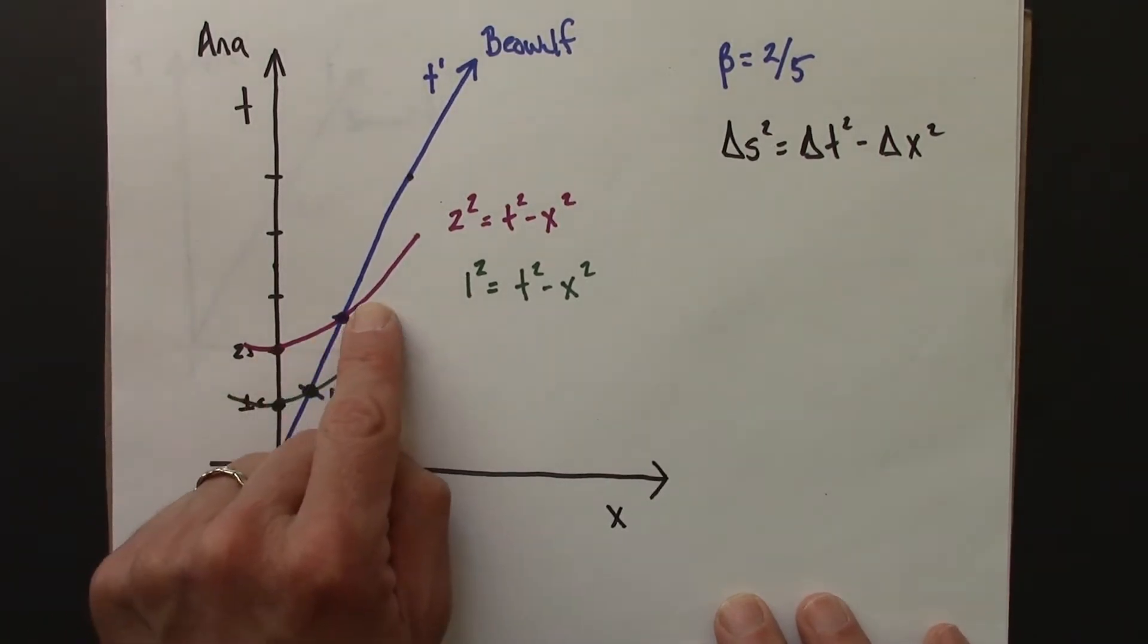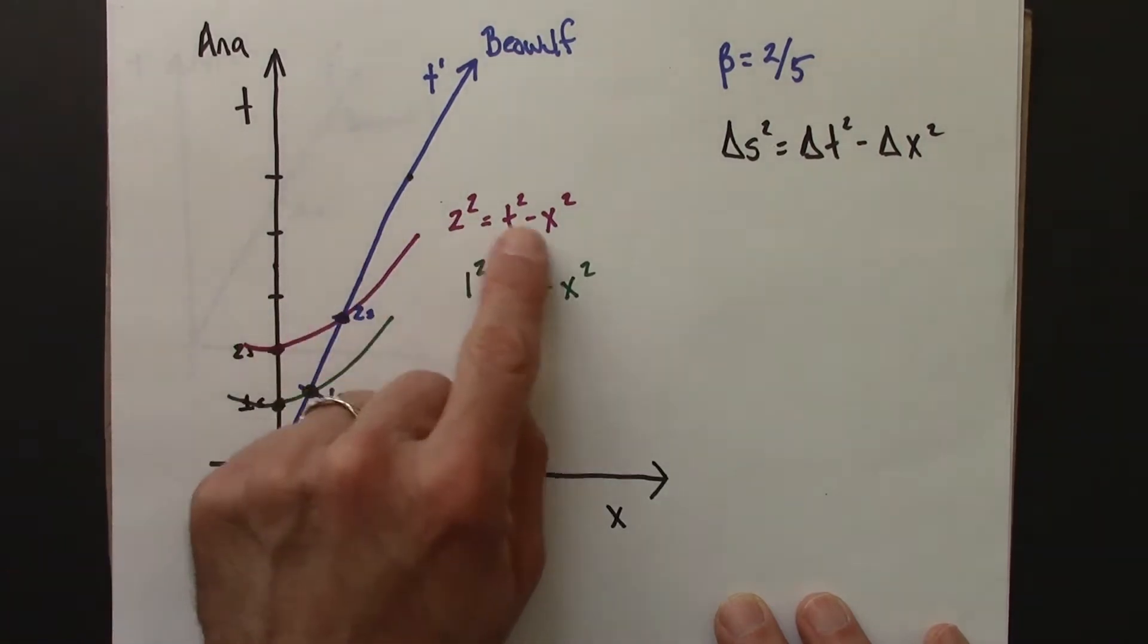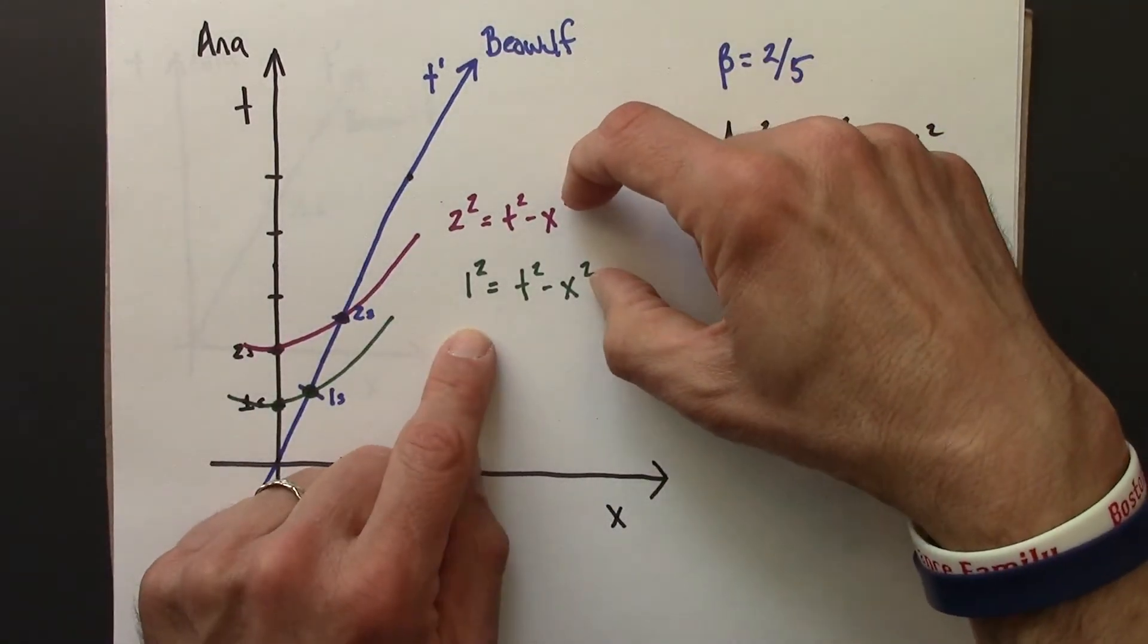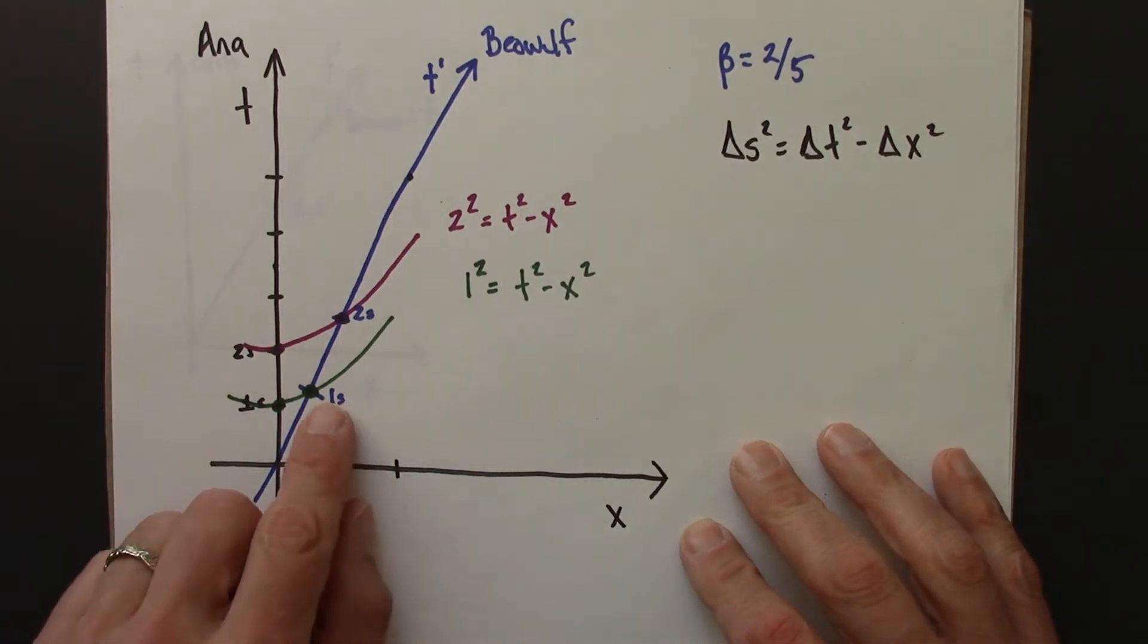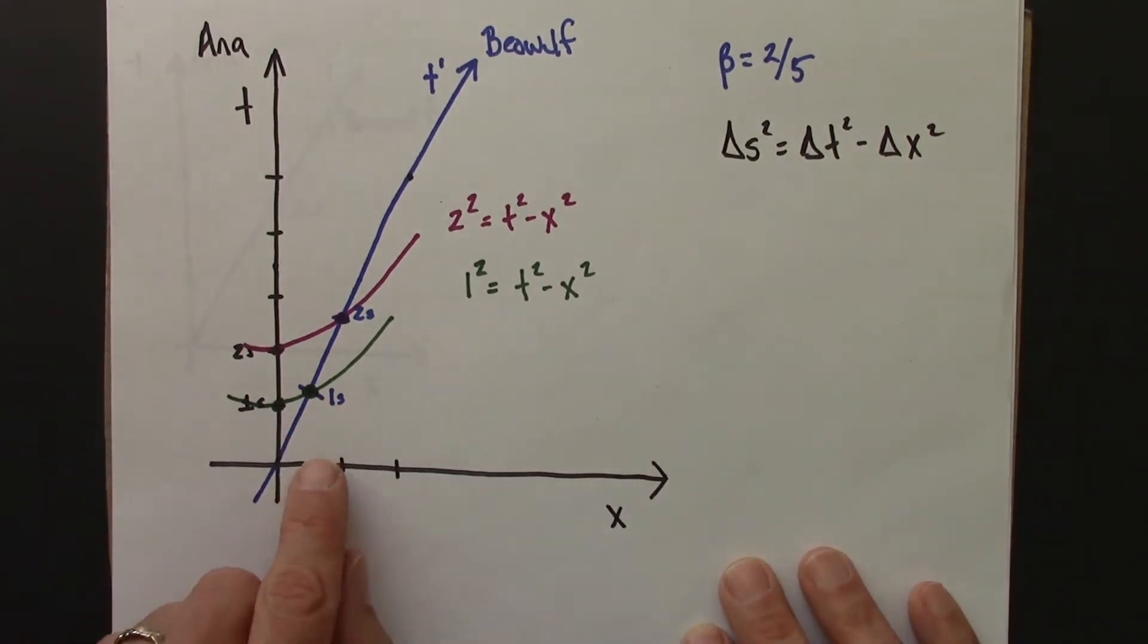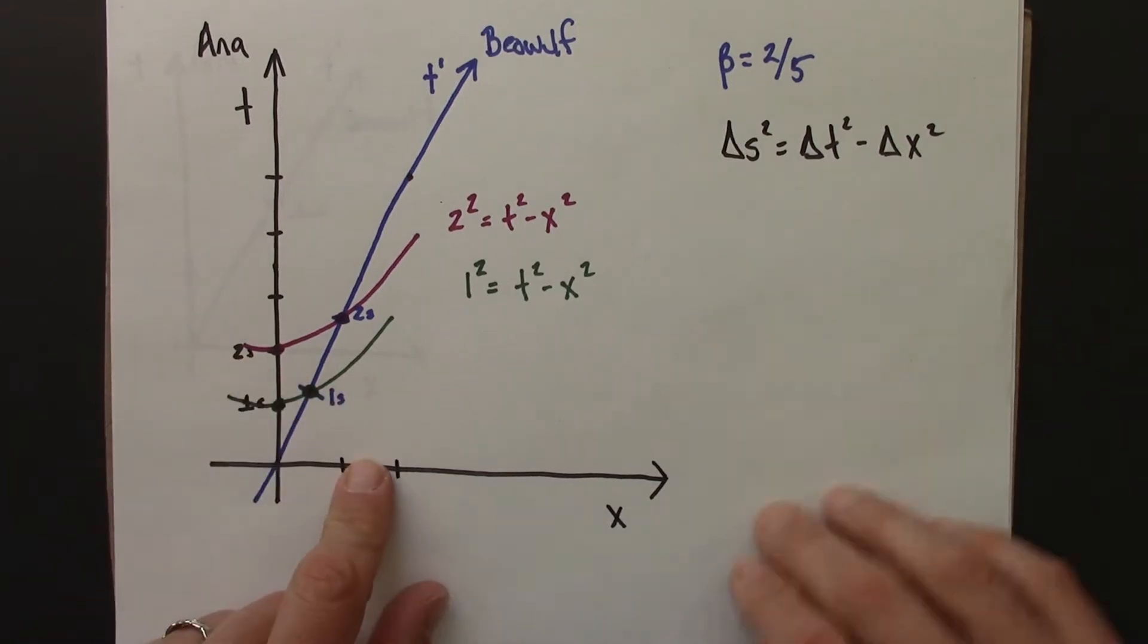Same thing for the two second marks and so on. They're connected by these different hyperbolas. So what I want to do in this video is come up with an algebraic formula for what this point would be, what the spacetime coordinates of this point are according to Anna.